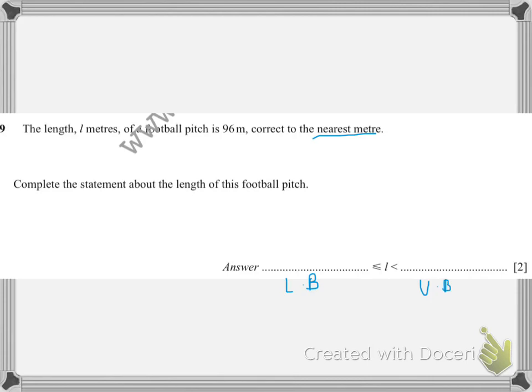In this question, first we need to find the lower bound. Here it mentions meter, so we'll consider it as 1. The lower bound will be 1 divided by 2, which equals 0.5. Then we will subtract: 96 minus 0.5, and you get 95.5.